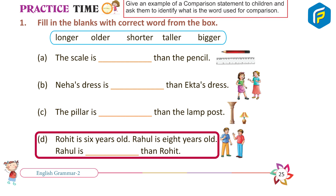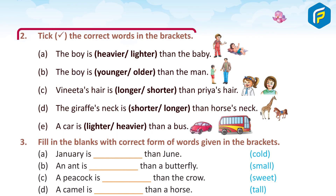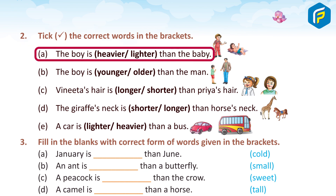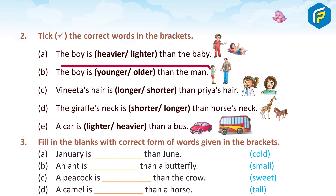D. Rohit is 6 years old. Rahul is 8 years old. Rahul is older than Rohit. Answer: Bigger/Younger.